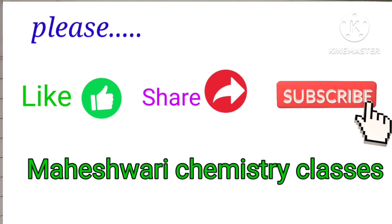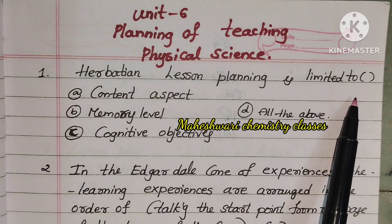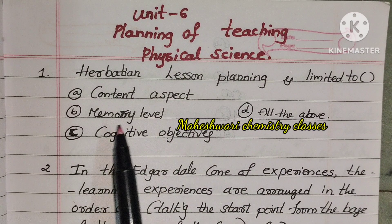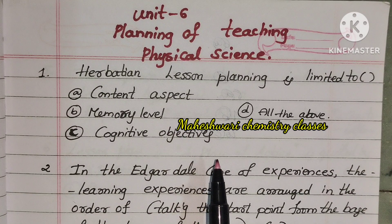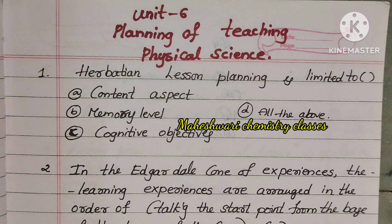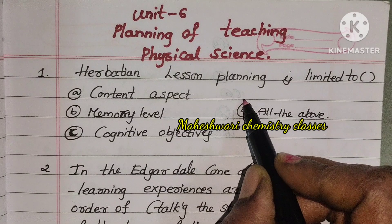Listen carefully. First question: Herbart's lesson planning is limited to — Option A: Content Aspect, Option B: Memory Level, Option C: Cognitive Objectives, Option D: All. In the first lesson planning type, content and subject are important. Memory is also important. So, D is right.